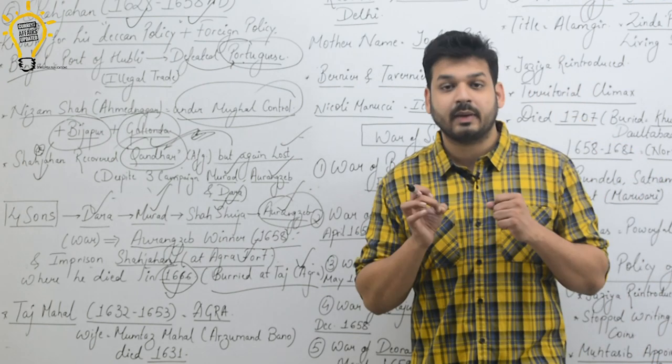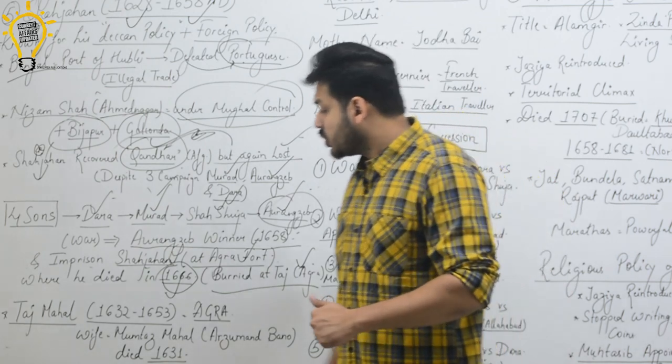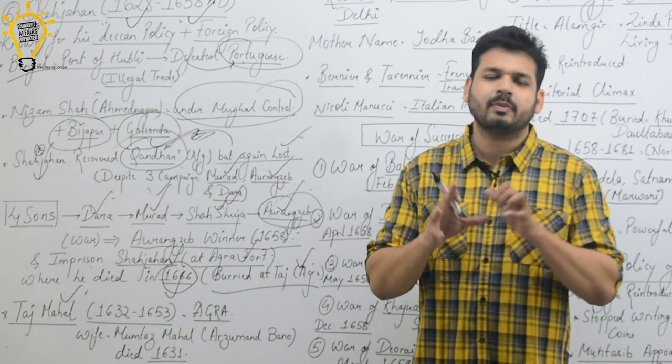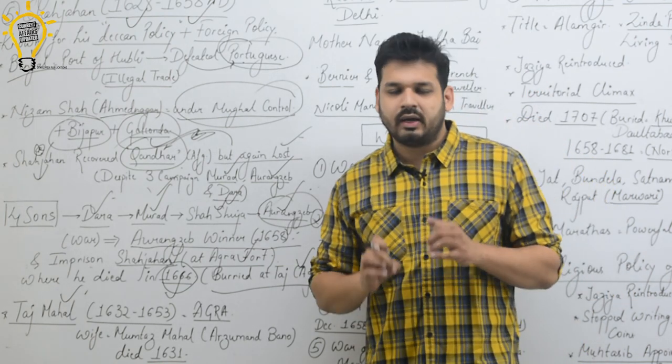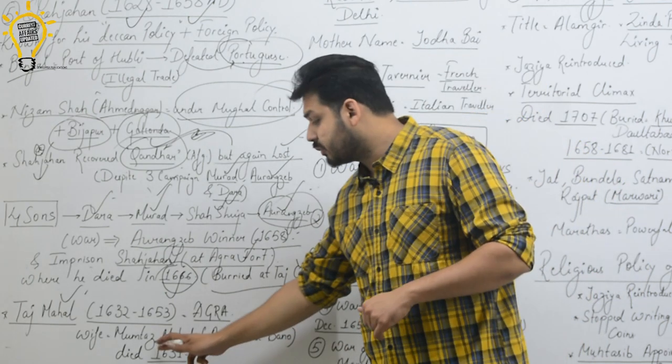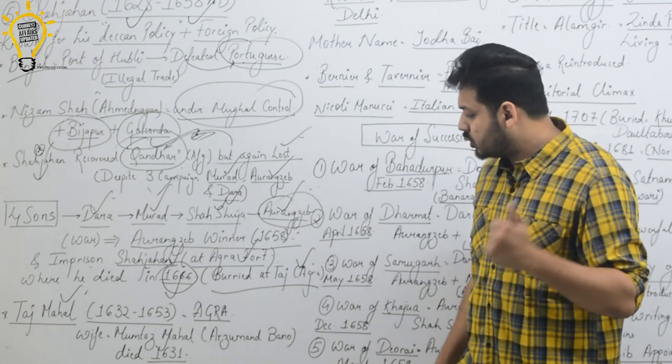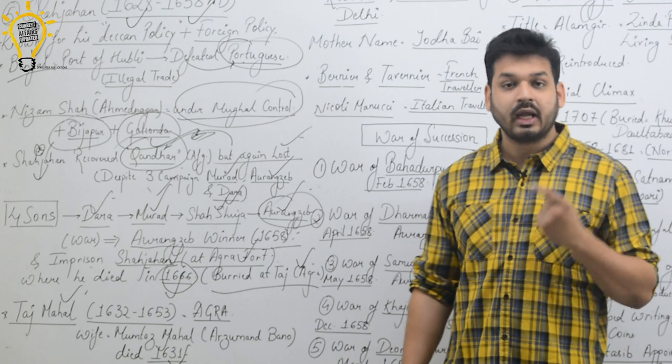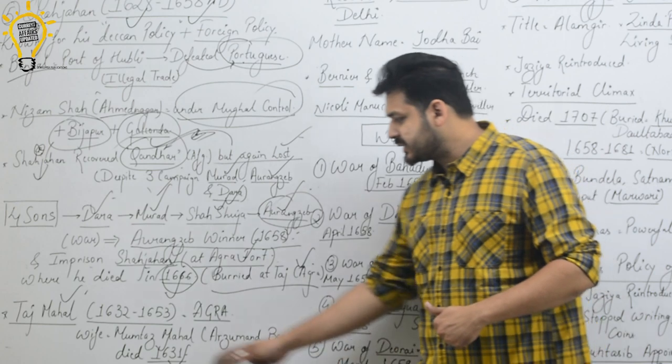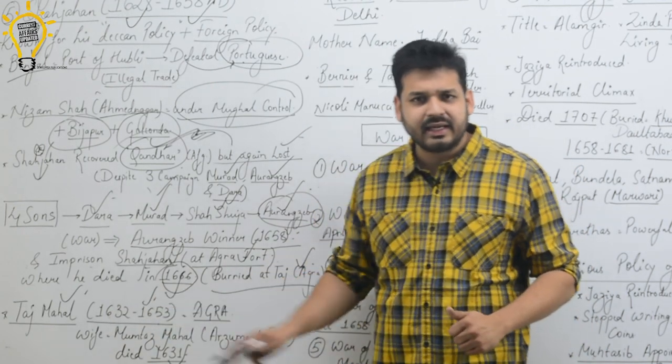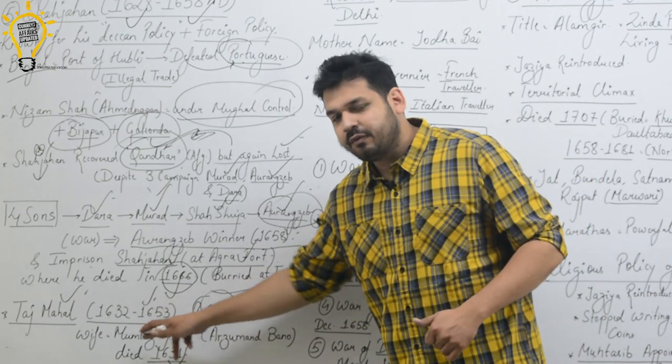One of the most important core points about Shah Jahan is the construction of Taj Mahal in Agra. His wife's name was Mumtaz Mahal. Mumtaz Mahal died in 1631 AD. In 1632 AD, he started constructing the Taj Mahal. Twenty years later, from 1632 to 1653 AD, the Taj Mahal was created in Agra for his wife Mumtaz Mahal.